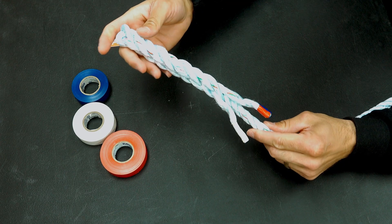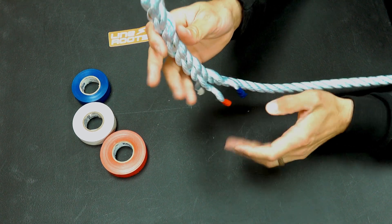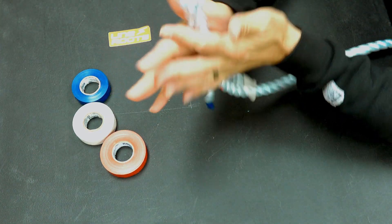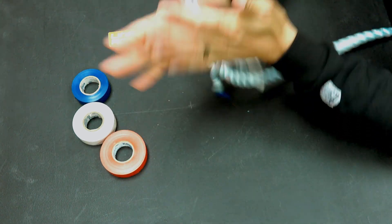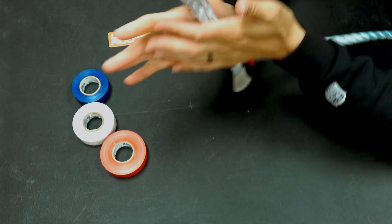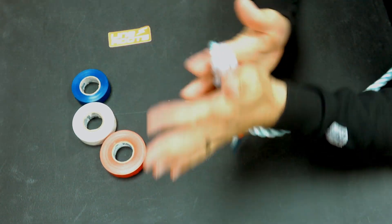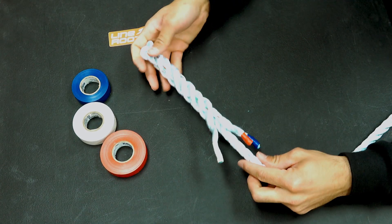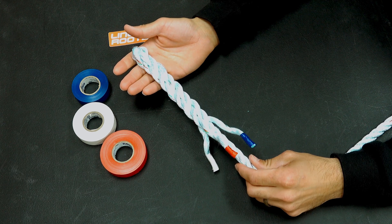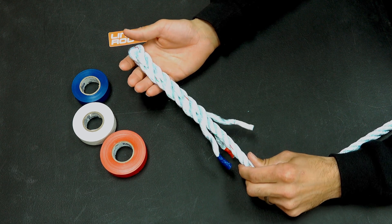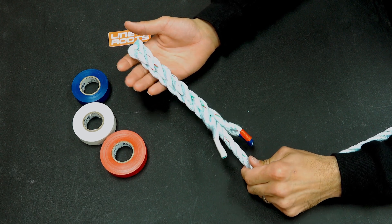After I have finalized all of my tucks, I'm going to walk the crown splice back and forth in between my hands to set all of the individual strands properly. Just like this. And that my friends is how to do a three strand crown splice.